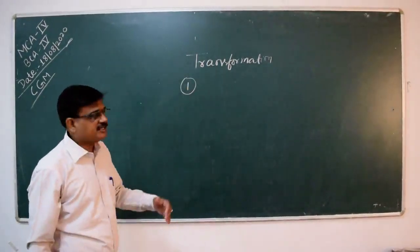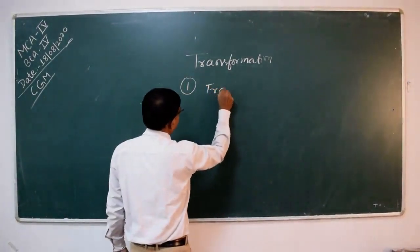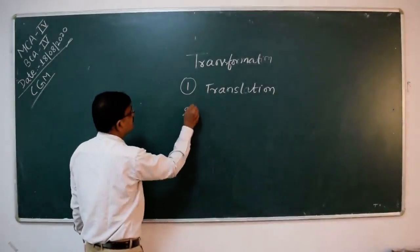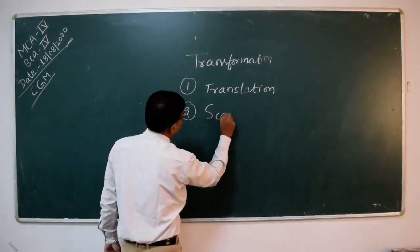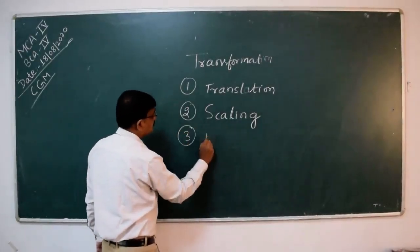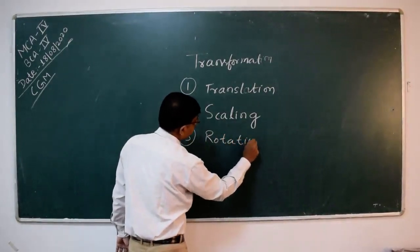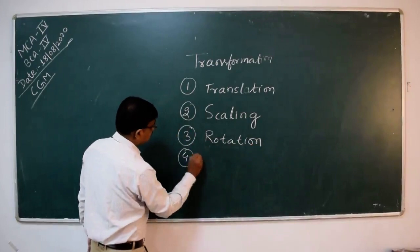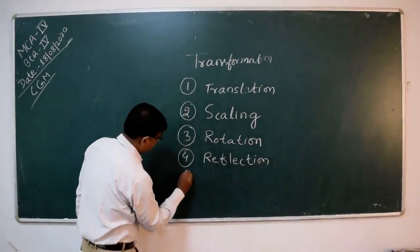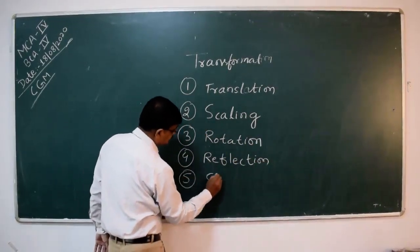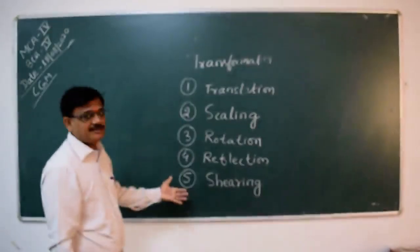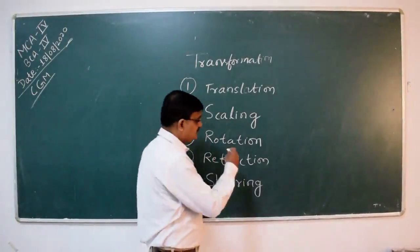Geometric transformations: the five types are translation, scaling, rotation, reflection, and shearing. These are the five types of transformations which we perform on any object.